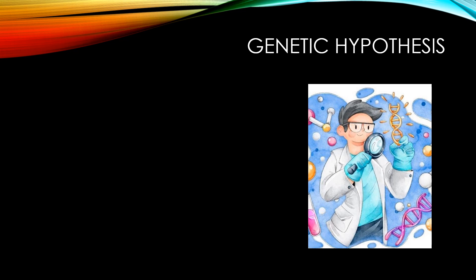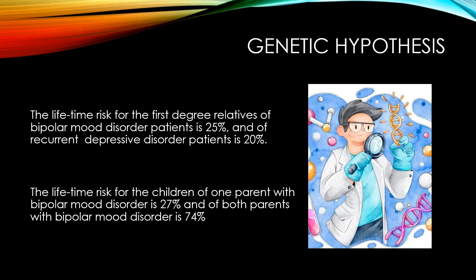The first is the genetic hypothesis. A lot of genes have been identified which lead towards the cause of bipolarity, but unfortunately there is no single gene identified. Multiple genes or a mixture of genes may lead to bipolarity. If there is a relative in the family with bipolar mood disorder, there are chances of getting bipolarity. If there is a first-degree relative, the chances are 25% for developing bipolarity and 20% for developing recurrent depressive disorder. The risk increases with the number and closeness of relatives — first-degree relative carries higher risk, second-degree comparatively lower.